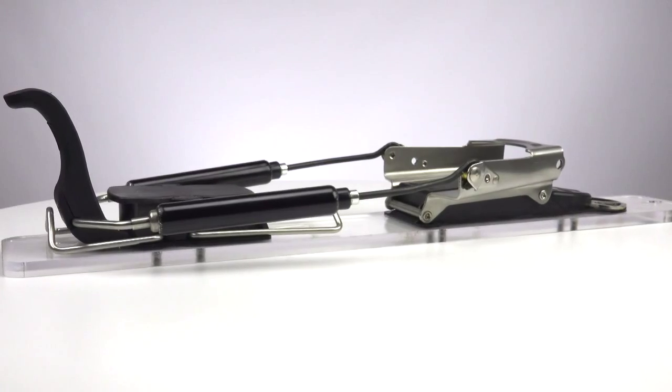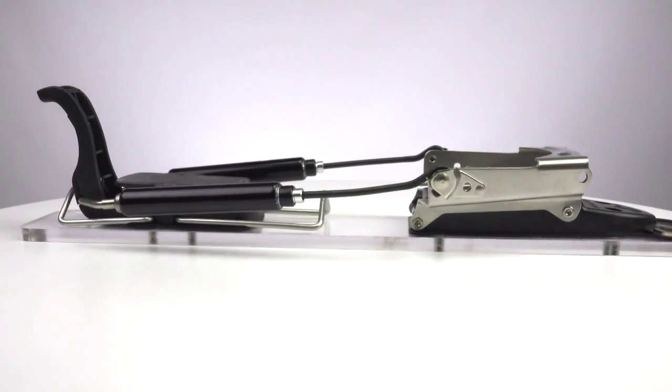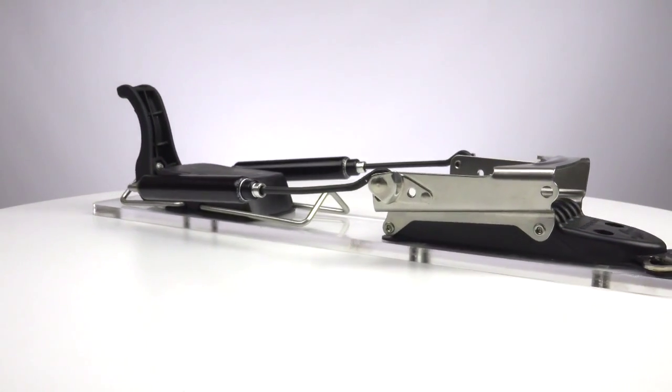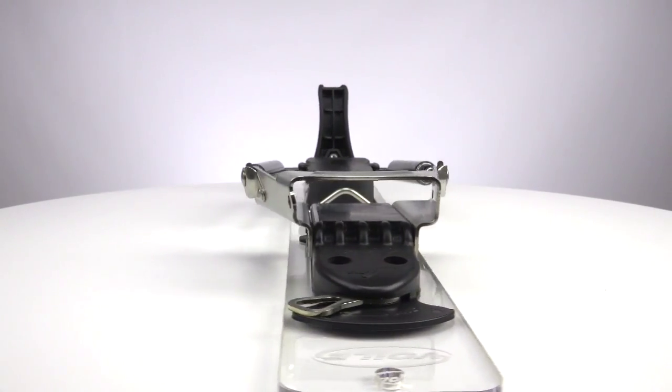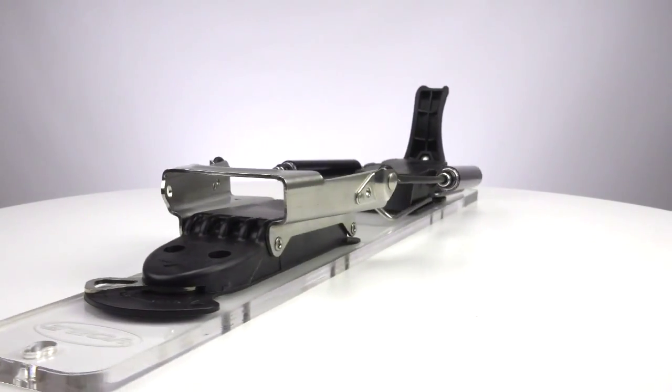We lengthened the toe plate by almost three centimeters, repositioning the hardwire cable pivot point, and stiffened the cartridge springs by 25%. This is what separates the X2 from the other Switchback models.